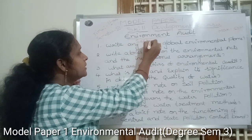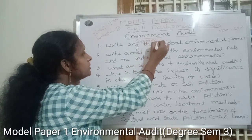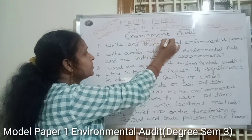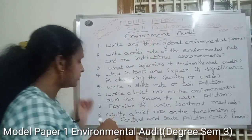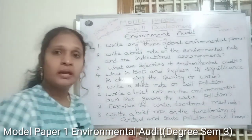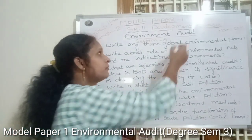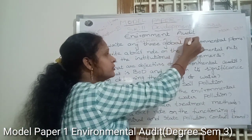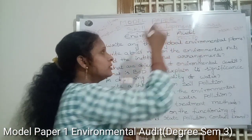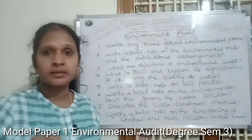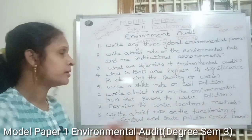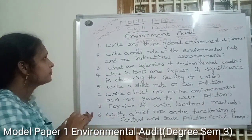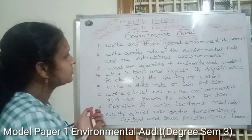Section A. You have a total of 8 questions. You need to answer 5 questions. We have a minimum of 20 marks in this section. Let's take the first question.